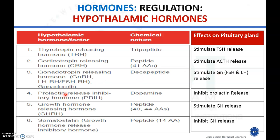The fourth hypothalamic hormone is prolactin release inhibiting hormone. This inhibitory hormone inhibits the pituitary gland and thereby inhibits prolactin release. The fifth is growth hormone releasing hormone (GHRH), which stimulates the pituitary gland to stimulate growth hormone release. Another hypothalamic hormone is somatostatin, also known as growth hormone release inhibitory hormone — somatostatin released from the hypothalamus inhibits the pituitary gland and thereby inhibits growth hormone release. These are the different hypothalamic hormones for regulation of hormonal release.